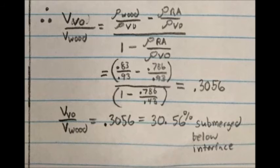Because the density of the wood is greater than the density of the rubbing alcohol, it will sink to the bottom of that layer, but it will float on top of the vegetable oil layer because the oil has a higher density.